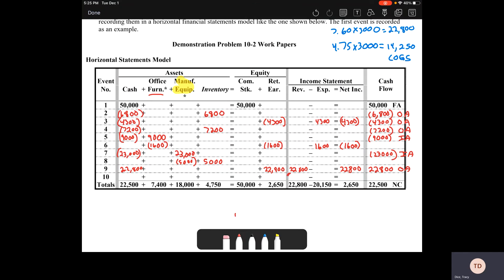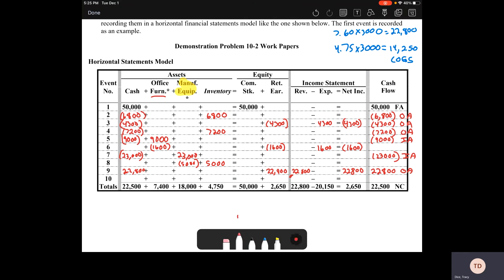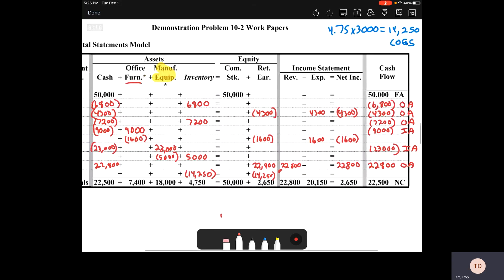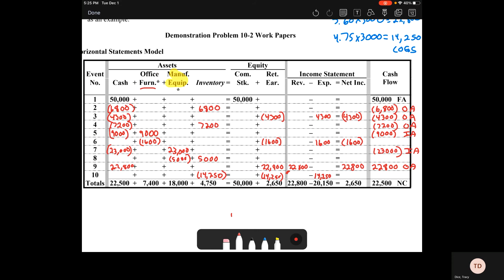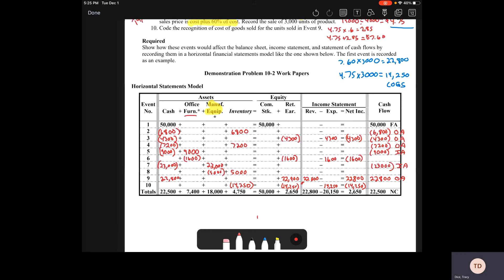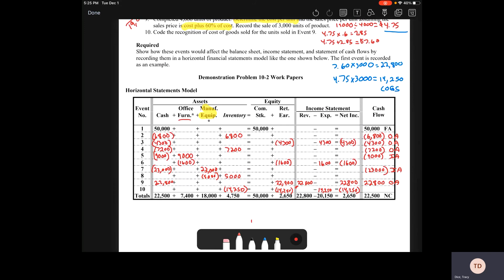We are going to take that out of our inventory because we have now sold that inventory. It also comes out of our retained earnings. Now it's an expense because it's the cost of goods sold, so we put it on the income statement. We're not doing any sort of cash exchange here, so nothing goes in the statement of cash flows. When you add all those up, you should find that you get the numbers at the bottom.